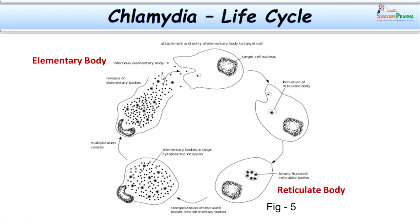The newly released elementary bodies further attack new susceptible cells, and the life cycle continues. This bacterium has a life cycle and exists in two different forms — reticulate body and elementary body — and it lacks a cell wall. Because it lacks a cell wall, antibiotics that act on the cell wall are not going to be effective in treating chlamydial infections.